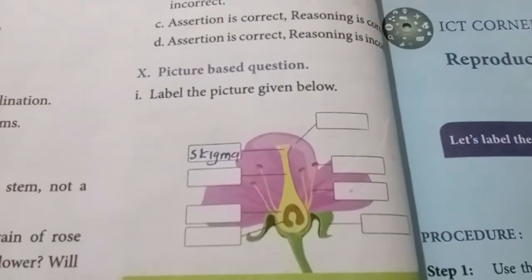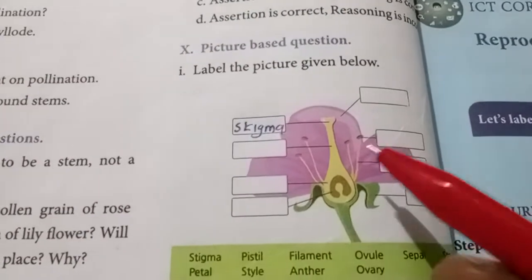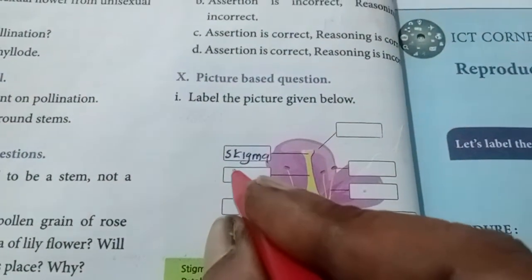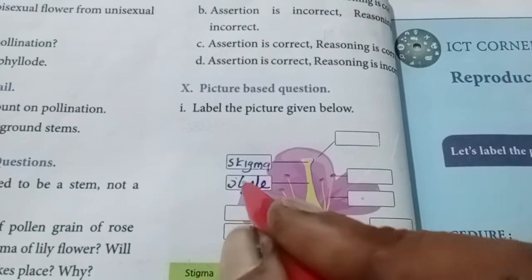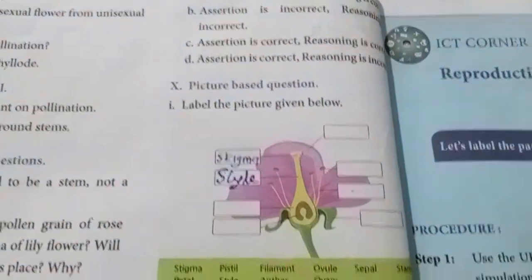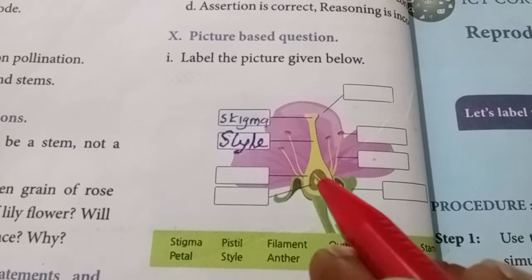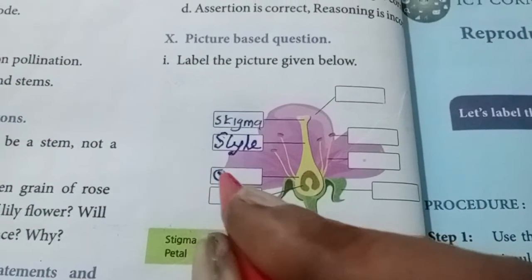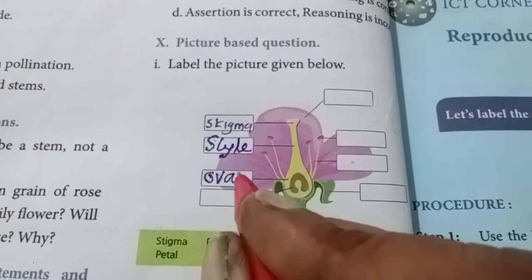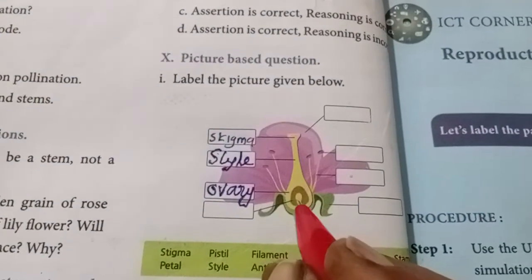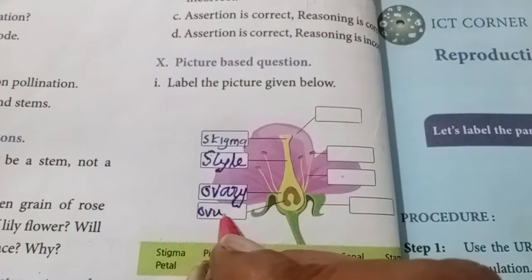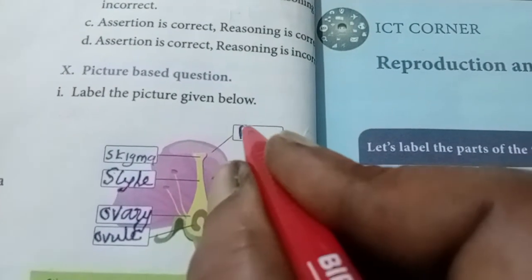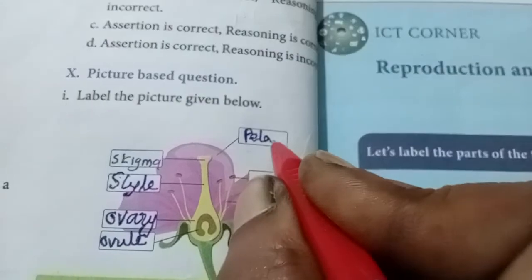Label the pictures given below: The first one is stigma. The second region is known as style — S-T-Y-L-E. The third one is the ovary. Inside the ovary, ovules are present; the ovules are developed into seeds. So the answer is ovary — O-V-A-R-Y.